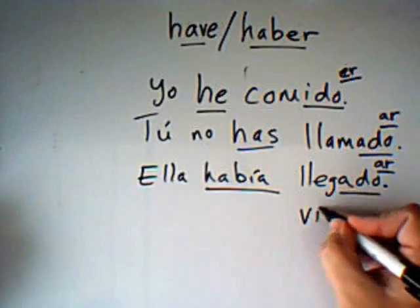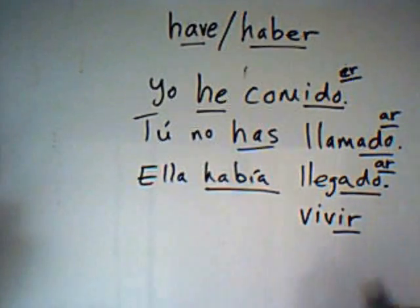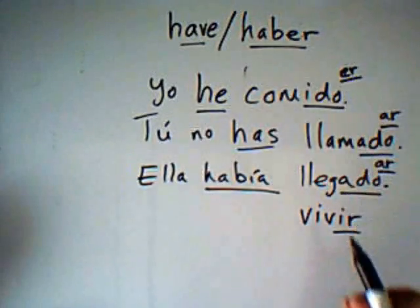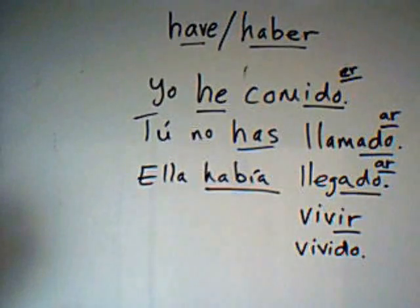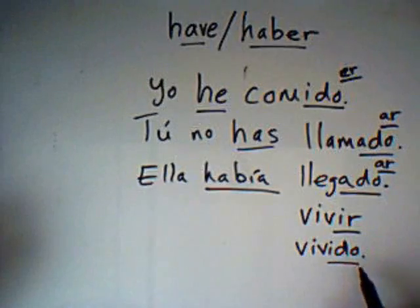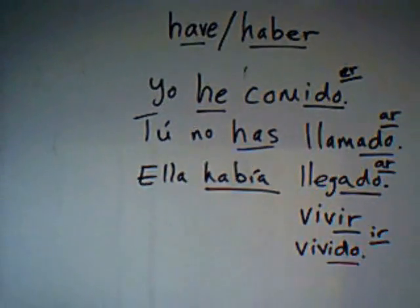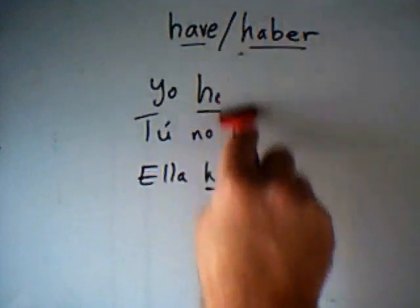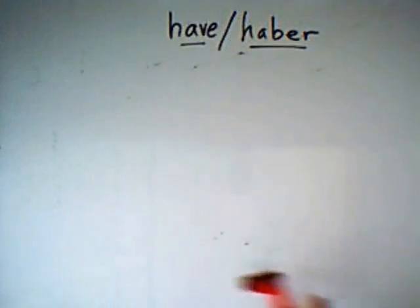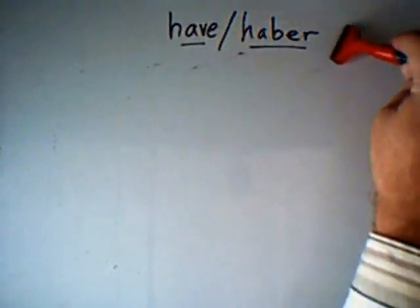For ER and IR verbs, the past participle ending is -ido. For example, the IR verb vivir gives us vivido — 'he has lived.' So this is just a quick overview of compound tenses. We've learned that compound tenses use a combination of an auxiliary verb and a main verb, and that in Spanish, the equivalent of 'to be' is estar, and the equivalent of 'to have' is haber. Hopefully I'll have time to upload lessons that give more examples for each of those two forms.